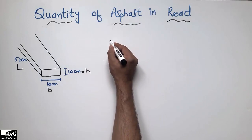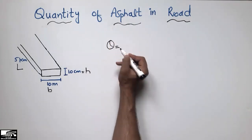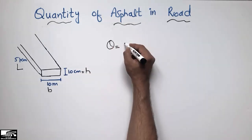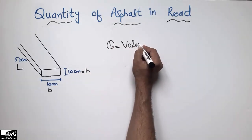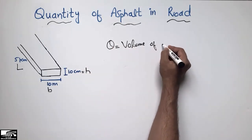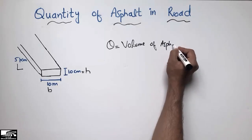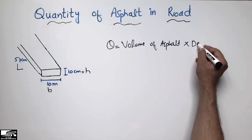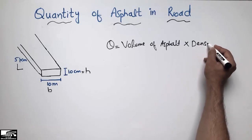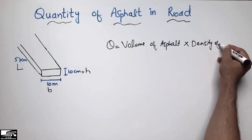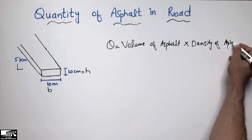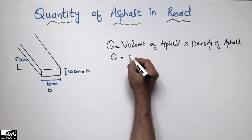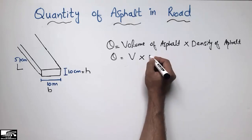To find the quantity of asphalt in the road, we use this formula: the quantity of asphalt equals the volume of asphalt multiplied by the density of asphalt.